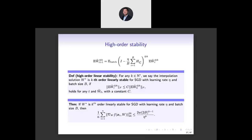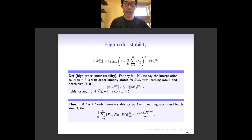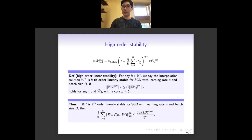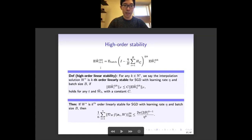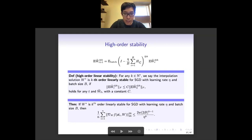We also did an extension of the linear stability theory to high-order stability. Considering the stability of the high-order tensor product of our linearized dynamics, we can make a similar definition and have the following result: if we have k-th order linear stability at w*, then the 2k-norm of the gradient at all training data xᵢ is upper bounded by a quantity of the batch size B and the learning rate.